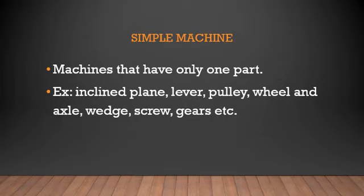First, we are going to see what are simple machines. Simple machines means machine that have only one part. Only one part. Like when you are using the net in the aquarium, it only has one part. Examples that are given is inclined planes, lever, pulley, wheel, axle, wedge, screw, gears, etc. All these things are simple machines.